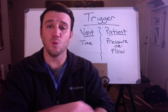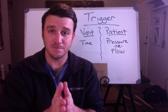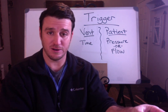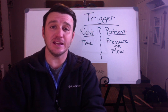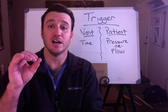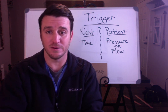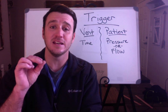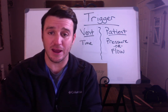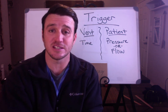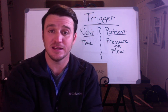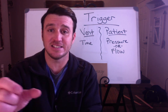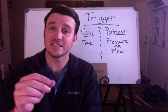No matter what mode you're talking about, the ventilator can start a breath and the patient can also initiate a breath. If you're in a mode where the ventilator gives a set tidal volume or set pressure and there's a set respiratory rate, then the ventilator trigger is always time. The vent gives a breath based off a time trigger. If you're in assist control set on a rate of 10, the ventilator is going to initiate that breath every six seconds — that's a time trigger.